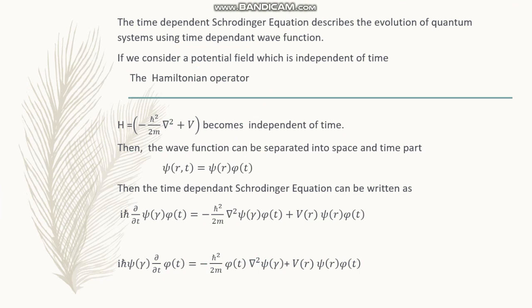We can see that the total energy operator — the Hamiltonian — includes the kinetic energy operator, minus h-cross squared del-squared over 2m. This kinetic energy operator is independent of time. When the potential is also independent of time, the total energy operator will become independent of time in that situation.